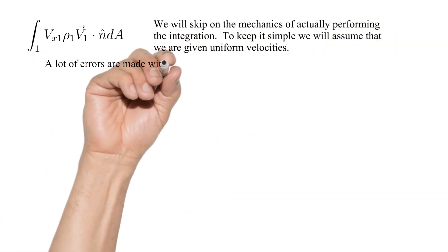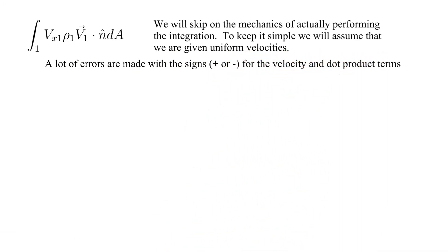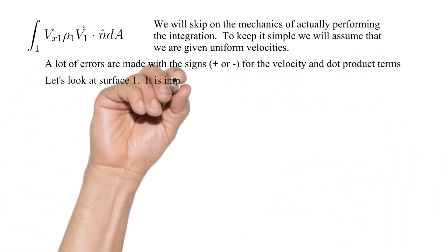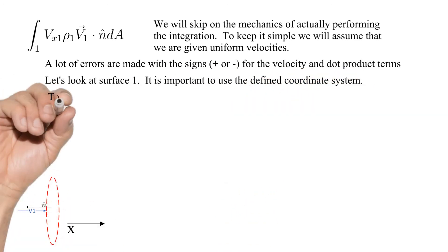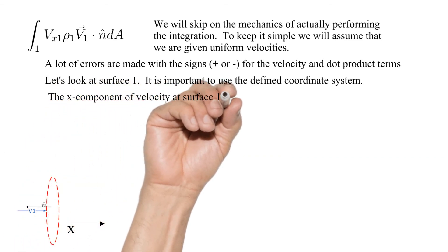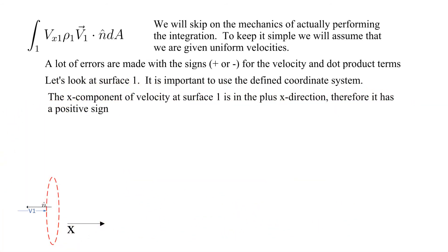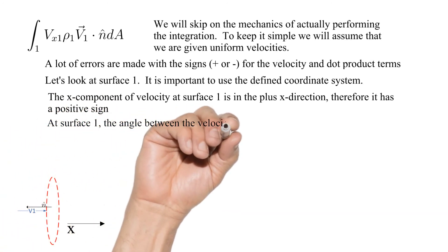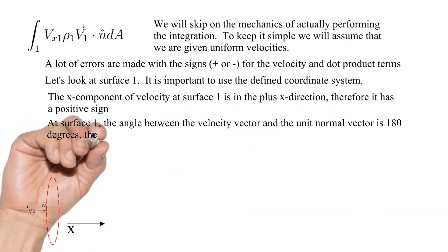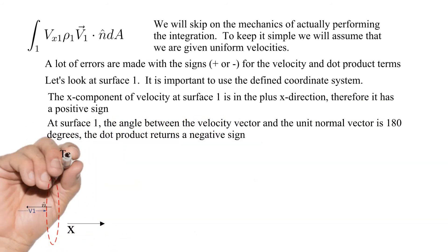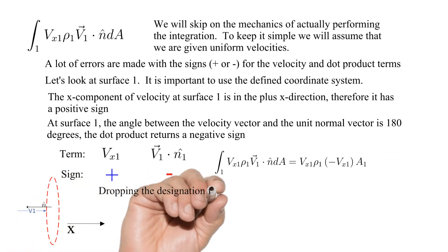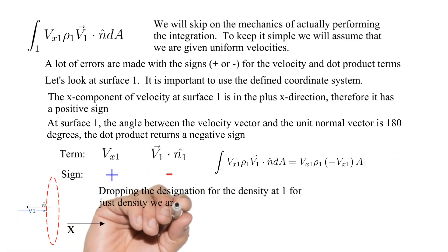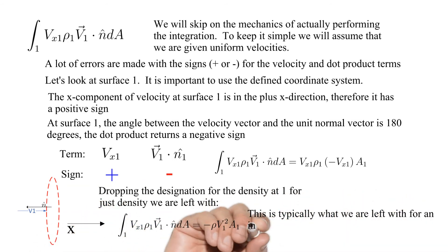A lot of errors are made with the signs for the velocity and dot product terms. Let's look at surface 1. It is important to use the defined coordinate system. The x component of velocity at surface 1 is in the plus x direction, therefore it has a positive sign. At surface 1, the angle between the velocity vector and the unit normal vector is 180 degrees, the dot product returns a negative sign. Dropping the designation for the density at 1 for just density we are left with minus rho v1 squared times area 1. This is typically what we are left with for an inflow with the velocity in the positive x direction.